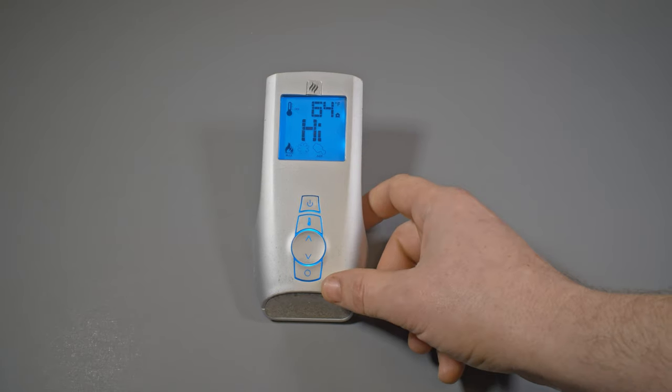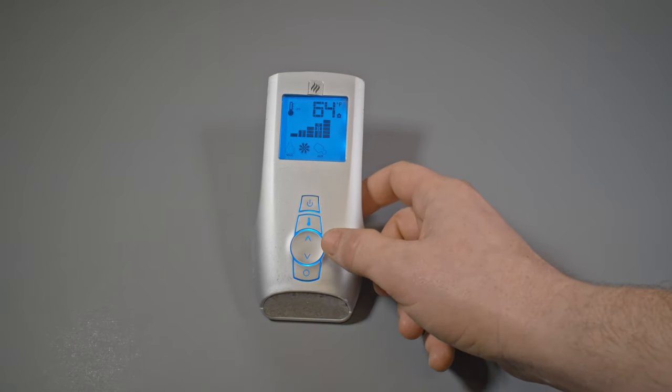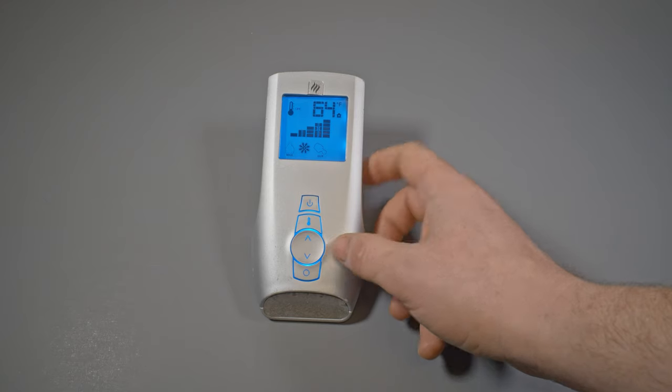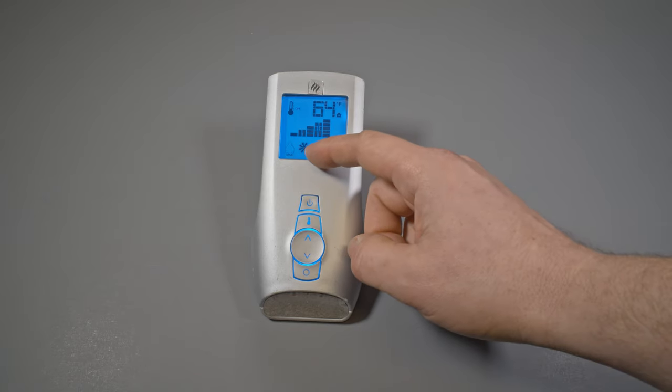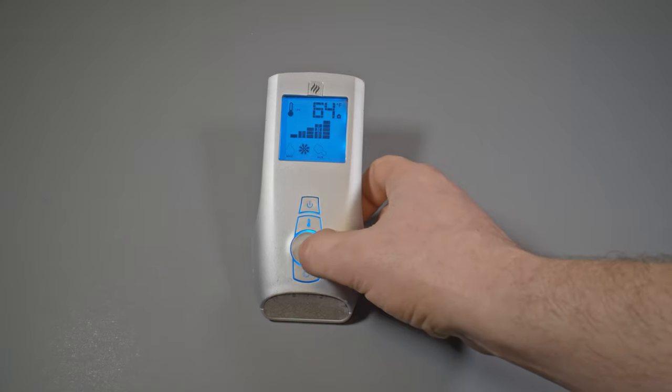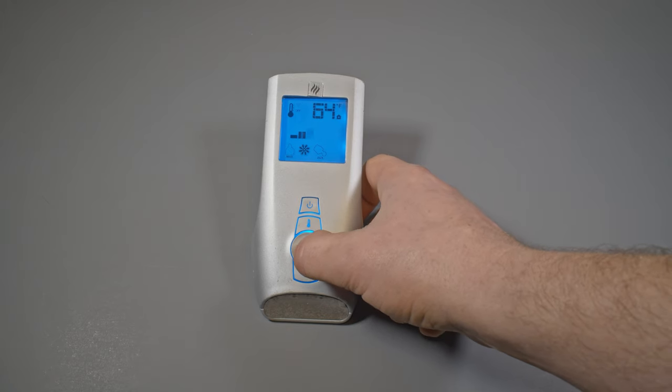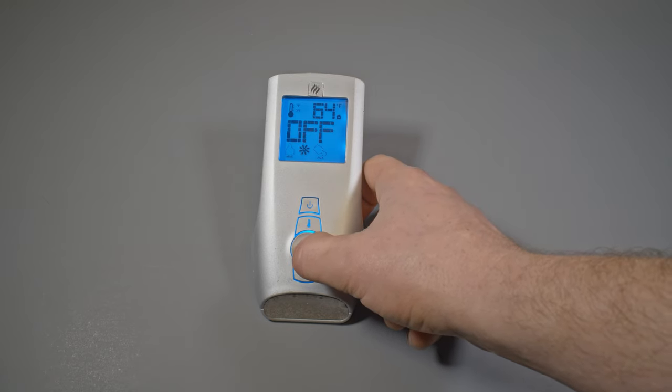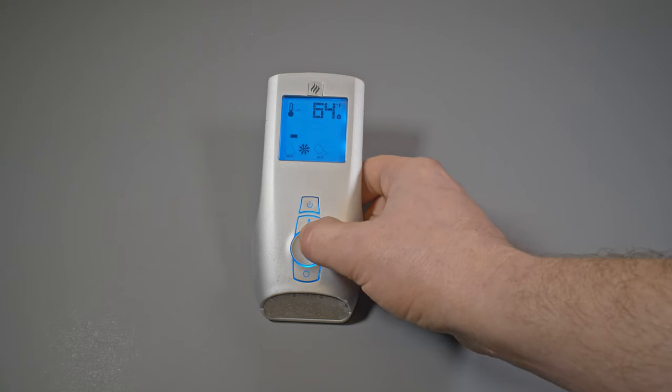I hit the mode button again and now I'm going to be able to toggle the fan speed that I have. Right now I'm at a medium high, but I can take that all the way down to off, and then I can scale it all the way up to high depending on my needs.